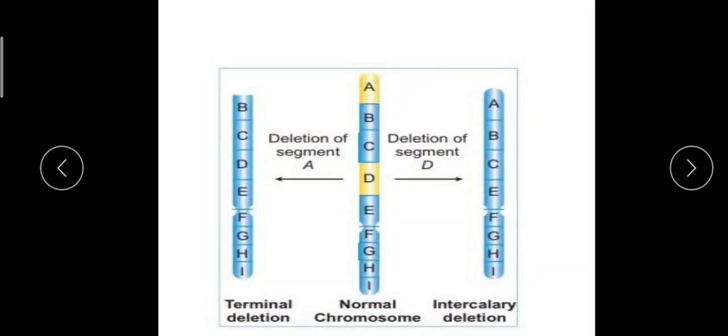Deletion involves the loss of genes, so it may have several effects. The genetic effect of deletion depends on the number and quality of the genes which are lost. If the lost gene has a crucial role in the physiology and viability of gametes, the effect will be much larger. Sometimes the deletion may be so small that it may hardly produce any detectable effect on the morphology or physiology.